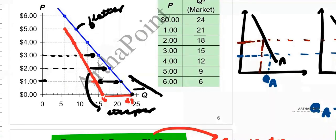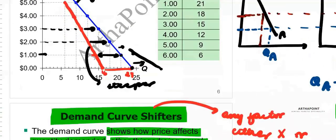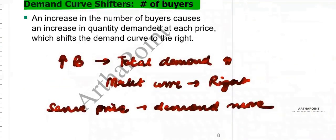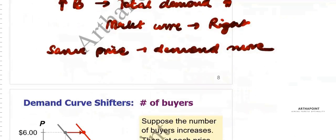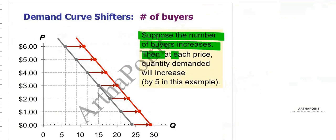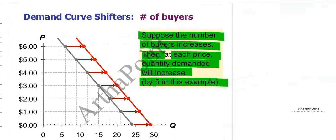When the number of buyers increases, there is one more person demanding your product, so demand increases and the demand curve shifts to the right. At each price, the quantity demanded will increase, so the demand curve shifts to the right.